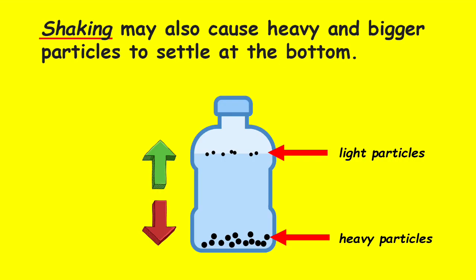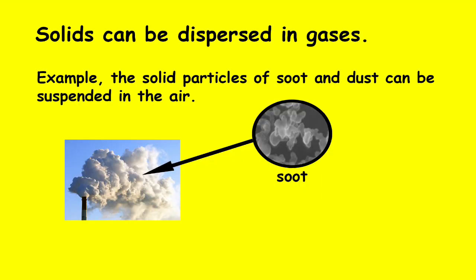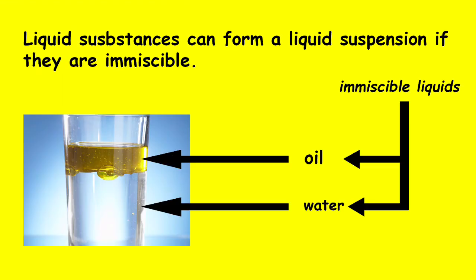Shaking may also cause heavy and bigger particles to settle at the bottom. A suspension mixture is also formed when solid particles are mixed with a liquid. For example, if you mix sand and water, sand eventually settles at the bottom. Solids can also be dispersed in gases — for example, the solid particles of soot and dust can be suspended in air. Liquid substances can form a liquid suspension if they are immiscible.